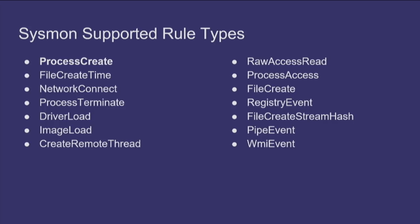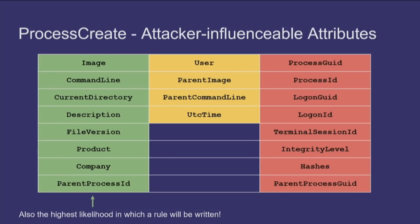Let's dive into process create events specifically. This diagram is extremely subjective. The column on the left in green shows fields directly influenceable by an attacker. This could depend on your initial point of entry — whether from an exploit, a macro — and post-exploitation factors that might not be directly influenceable. This was developed more from the perspective of a true post-exploitation scenario. The column in the middle could potentially be influenced. The red ones — generally speaking, you don't have much control over those.